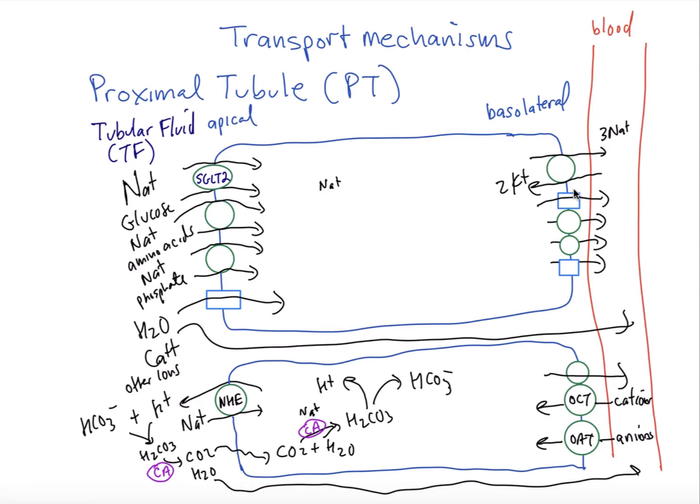We have other co-transporters, sodium amino acid co-transporter, sodium phosphate co-transporters, and we also have constitutively present water channels that allow water to be reabsorbed. Now on the basolateral side we're just going to unname these transport mechanisms. It's not really all that important to know their names. Probably the most important transporter on the apical side here is this SGLT2 because it is a target of a very important class of drugs to treat diabetes mellitus.